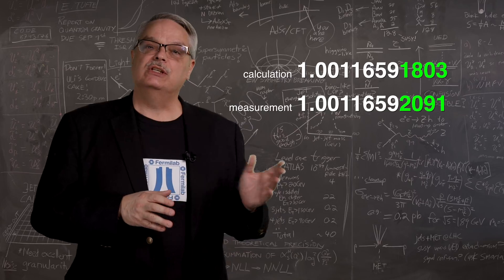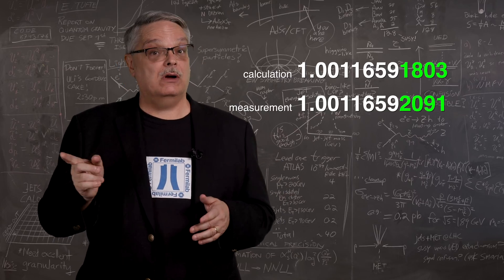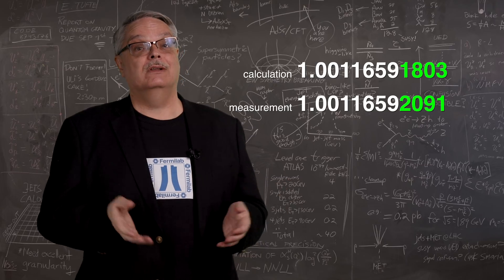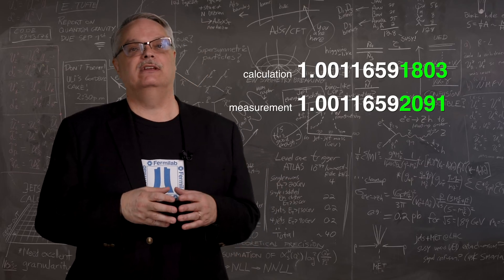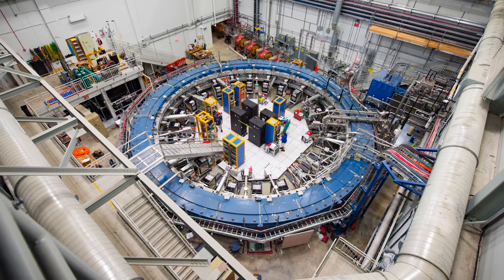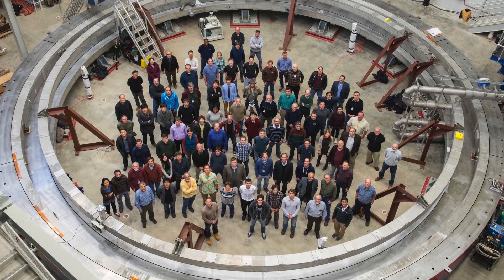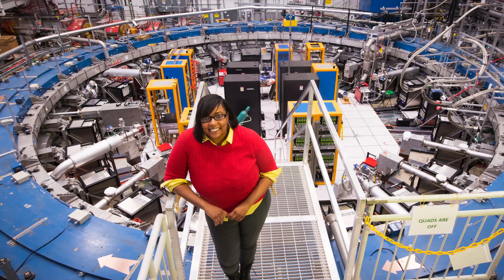Now when measurements and predictions disagree, that can mean a discovery. But the disagreement has to be large and precise to be sure that it's real, and this particular disagreement isn't quite big enough to be definitive. So the Fermilab G-2 collaboration is redoing the measurement with much better equipment. If the new measurement agrees with the old one, this will be very exciting indeed.